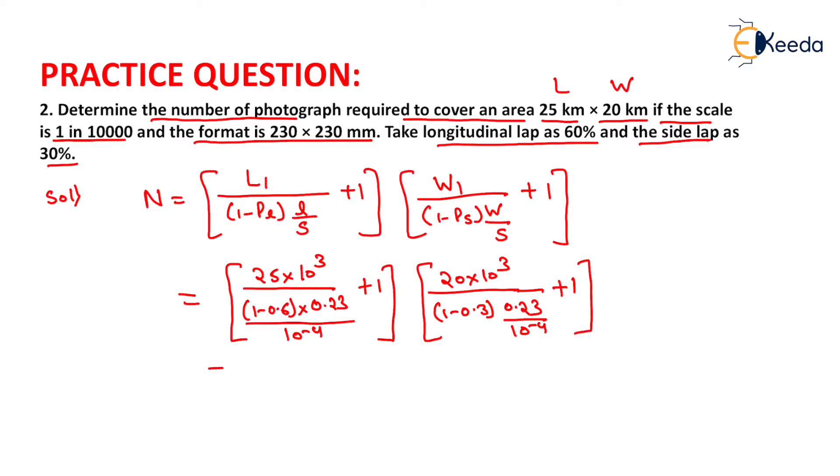On solving this and rounding off to the individual value, we will get 29 into 14 and on multiplication of these two values, we will get the number of photographs is 406 numbers. That will be the number of photographs required for covering an area of 25 kilometer into 20 kilometer.